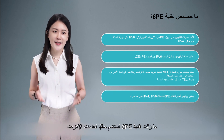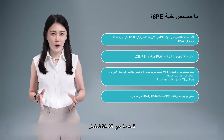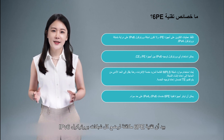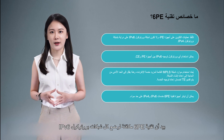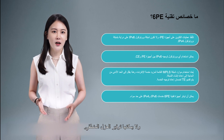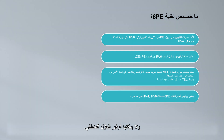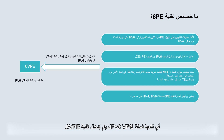Currently, 6PE is still used for Internet services provided over the public network. However, 6PE is equivalent to placing all IPv6 networks connected through 6PE in one VPN — it cannot provide logical isolation. To logically isolate the connected IPv6 networks, that is, to implement IPv6 VPN, 6VPE is introduced. We will talk about 6VPE in the next video.